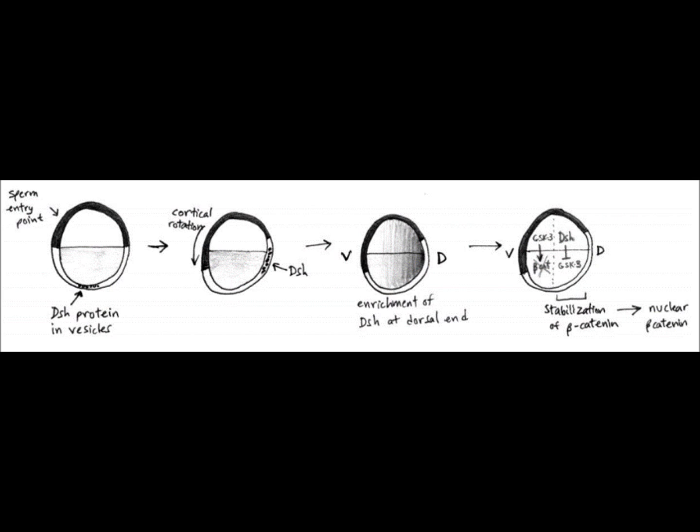Disheveled in the Wnt pathway is an anti-GSK3 protein that prevents GSK3 from phosphorylating beta-catenin to initiate its degradation. During cortical rotation, these vesicles containing the disheveled protein are moved to the future dorsal side of the embryo and are able to stabilize beta-catenin at the future dorsal side.